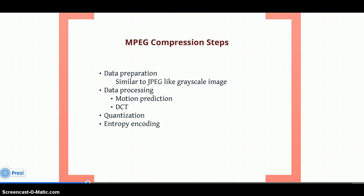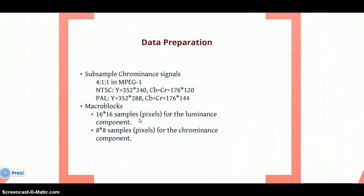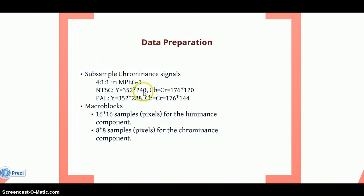The third step is quantization and entropy encoding. I will explain one by one. For data preparation, suppose we have any RGB image — we will convert it into the YCbCr ratio. MPEG 1 follows 4:1:1, meaning the luma ratio is 4, CB luminance is 1, and chrominance is 1. These are the two standards for how to calculate the YCbCr values. These are the pixel values and the default values for that.